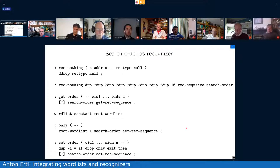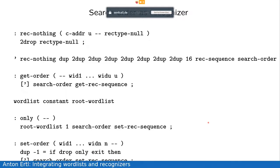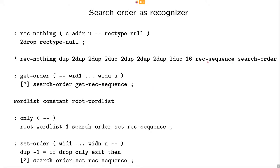So, set-rec-sequence also not really remarkable. And then we continue with the search order as recognizer. So, basically, we have done most of the work in the recognizer sequences. So, here we just want to implement get-order and set-order. And this is pretty easy. Get-order just takes the search order and treats this as a recognizer sequence and gets the contents of the recognizer sequence.